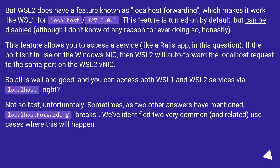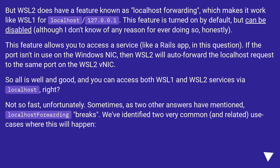But WSL 2 does have a feature known as localhost forwarding, which makes it work like WSL 1 for localhost/127.0.0.1. This feature is turned on by default but can be disabled, although there's rarely a reason to do so. It allows you to access a service — like a Rails app in this question — and if the port isn't in use on the Windows NIC, WSL 2 will auto-forward the localhost request to the same port on the WSL 2 NIC. So you can access both WSL 1 and WSL 2 services via localhost.